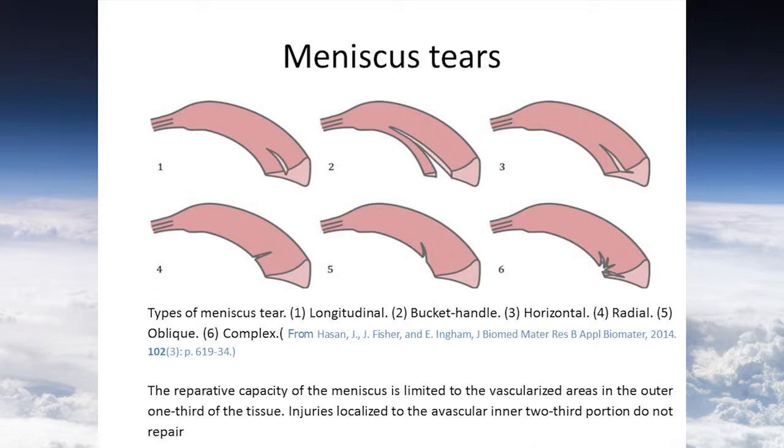The reparative capacity of the meniscus is limited to the vascularized areas in the outer one-third of the tissue. Injuries localized in the avascular inner two-thirds portion usually do not repair.